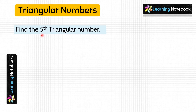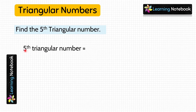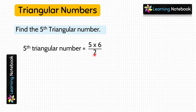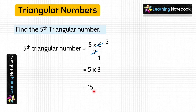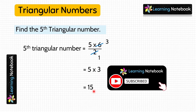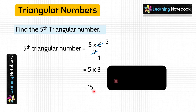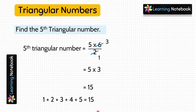Let's find the 5th triangular number using the shortcut. We will write 5, then multiply it by the next number which is 6, and divide both of them by 2. Simplifying, we get 5 × 3 = 15. So the 5th triangular number is 15. You can verify by adding the first 5 numbers and you will get the sum as 15. This shortcut method is very easy and useful to find any triangular number.